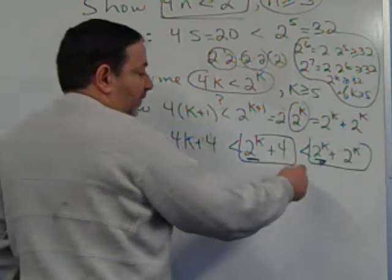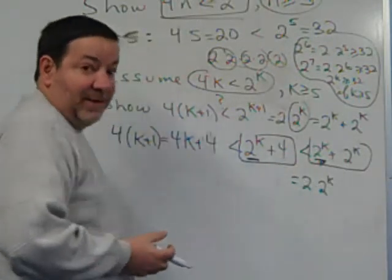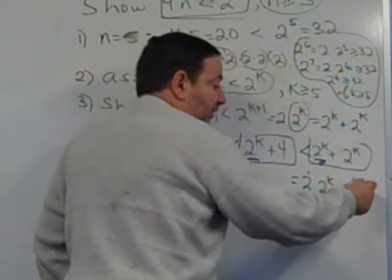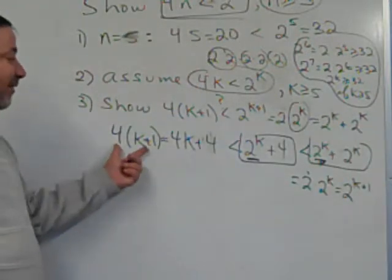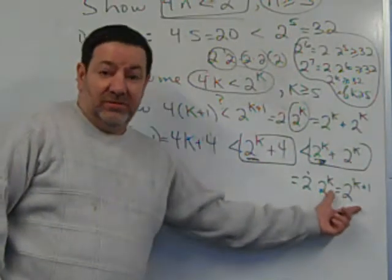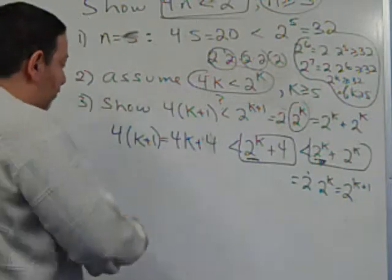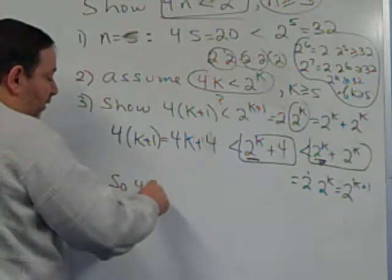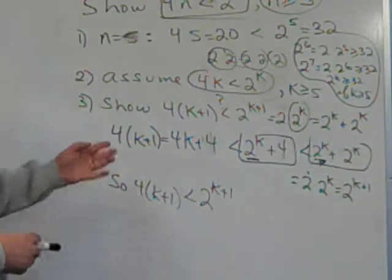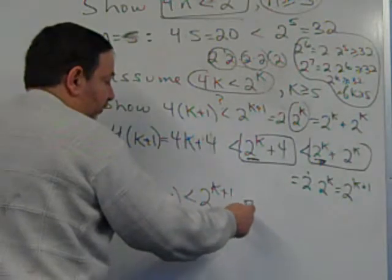Comparing these two: they both have 2 to the k, and on the left side I added 4, while on the right side I added 32 or more — I added more than 4 to the right side. You add the same thing to itself two times, you get 2 times 2 to the k, which equals 2 to the k plus 1. So 4 times (k plus 1) is less than 2 to the (k plus 1). That's exactly what I wanted to show. The proof is done.